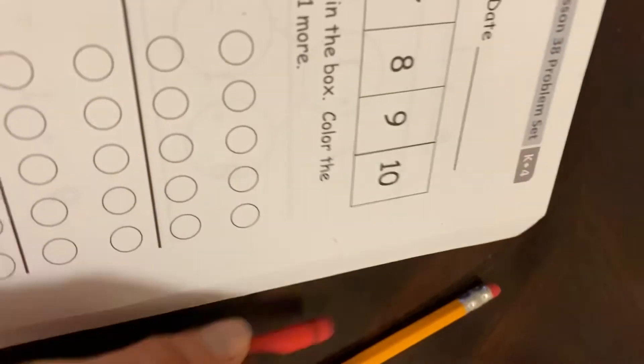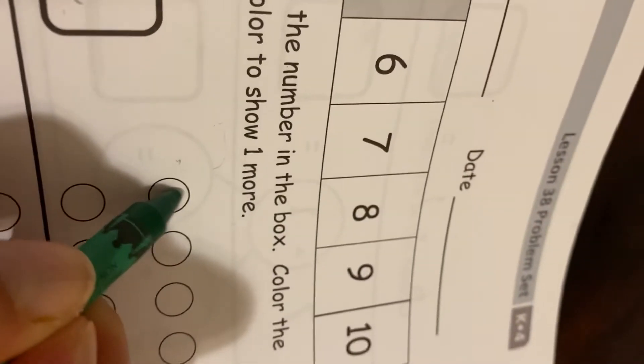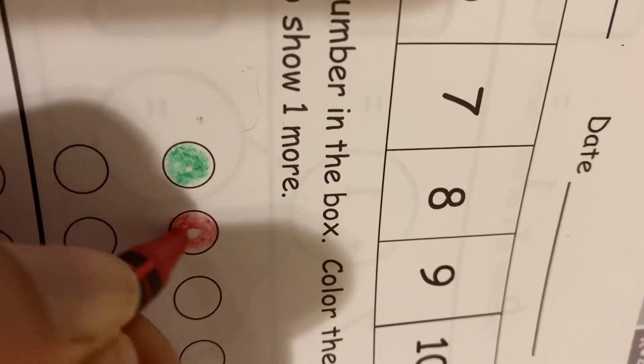So you're going to write the number two in the box. And then to show that, you're going to use two different color crayons. You can use whatever color crayons you want. I'm going to use red and green. So I'm going to do green to show one and red to show one more.